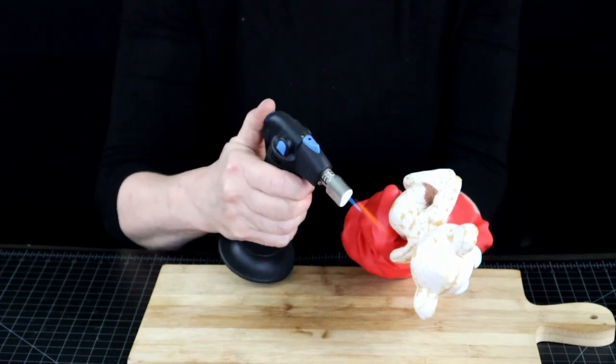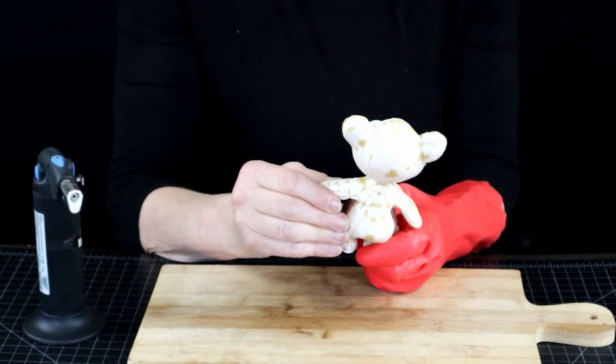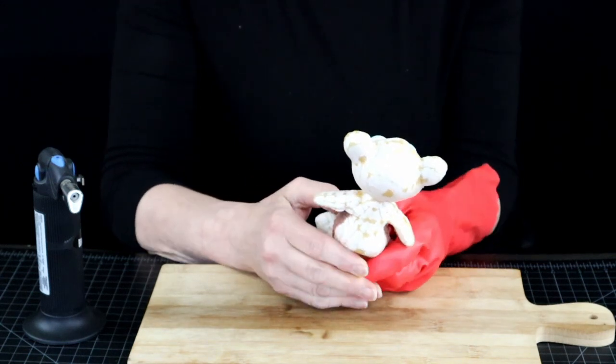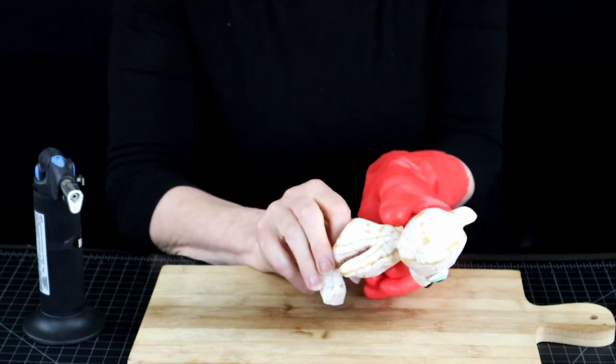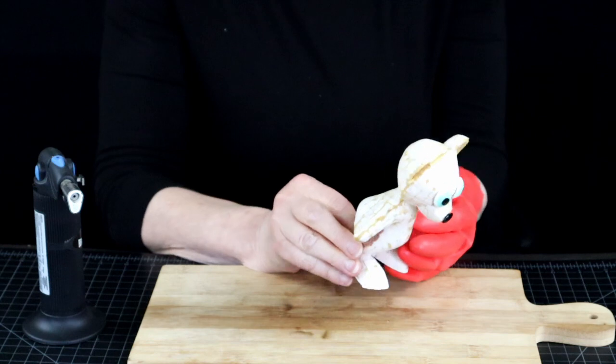A torch is a step up because you can direct the flame more precisely where you need it. But if you are at the point of considering buying yet another dedicated appliance, consider a heat gun instead.